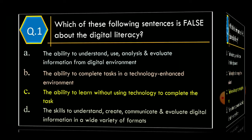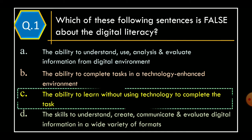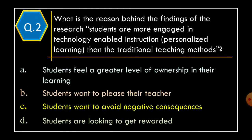Assessment 1, MCQs, Question 1: Which of the following sentences is false about digital literacy? Option A: The ability to understand, use, analyze and evaluate information from the digital environment. Option B: The ability to complete tasks in technology-enhanced environments. Option C: The ability to learn without using technology to complete the task. Option D: The skills to understand, create, communicate and evaluate digital information in a wide variety of formats. The correct option is Option C: The ability to learn without using technology to complete the task.